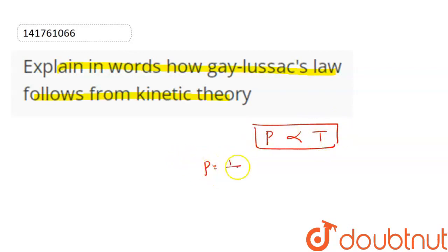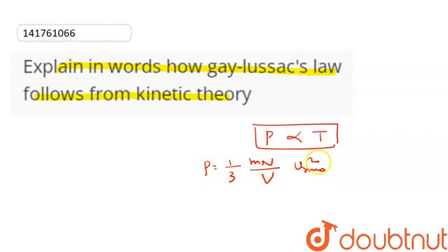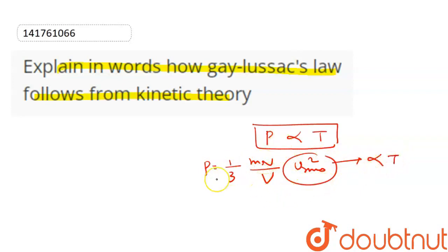According to the kinetic theory of gases, pressure of a gas is equal to 1/3 × (mn/V) × v_rms². Since v_rms² is proportional to temperature, this confirms Gay-Lussac's Law.